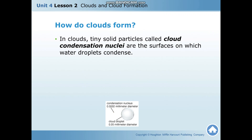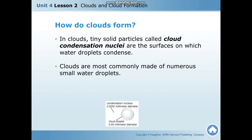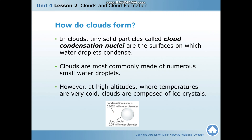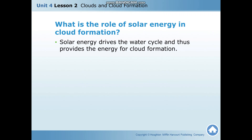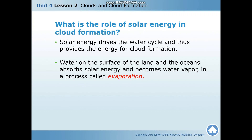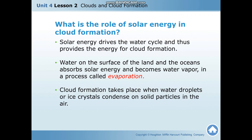In clouds, tiny solid particles called cloud condensation nuclei are the surfaces on which water droplets condense. Clouds are most commonly made of numerous small water droplets. However, at high altitudes where temperatures are very cold, clouds are composed of ice crystals. The surface of the land and the oceans absorb solar energy and become water vapor in a process called evaporation. Cloud formation takes place when water droplets or ice crystals condense on solid particles in the air.